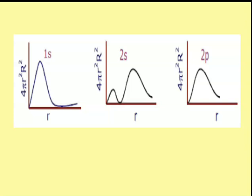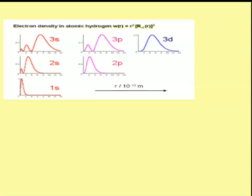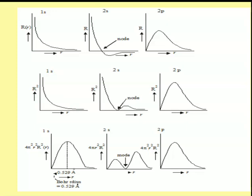In the next slide, we have the comparison of all the graphs — representing the radial wave function, radial probability density, and radial probability distribution functions for 1s, 2s, and 2p.